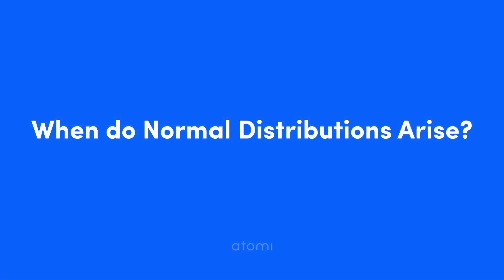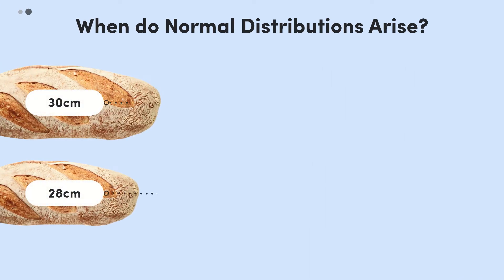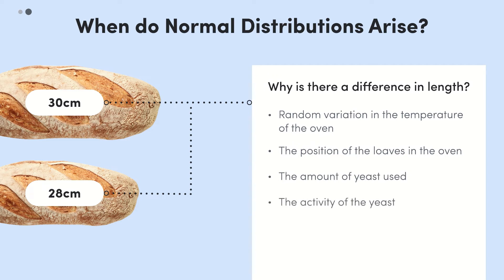So when do normal distributions arise? There are many reasons why there would be slight differences between the loaves of bread, some of which we've already hinted at. This might be because of random variation in the temperature of the oven, the position of the loaves in the oven, the amount of yeast used, the yeast's activity, and on and on.